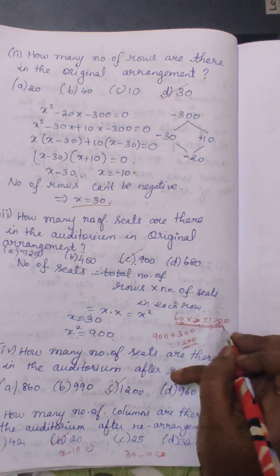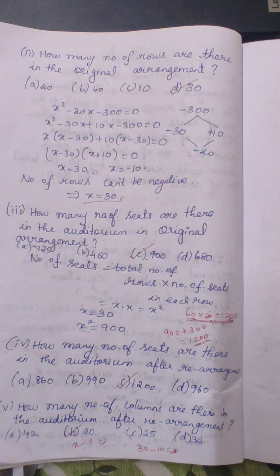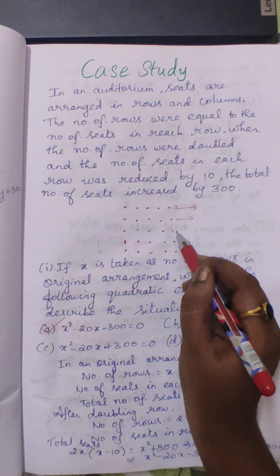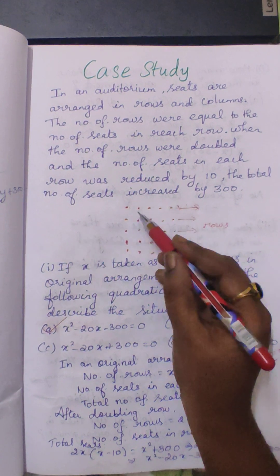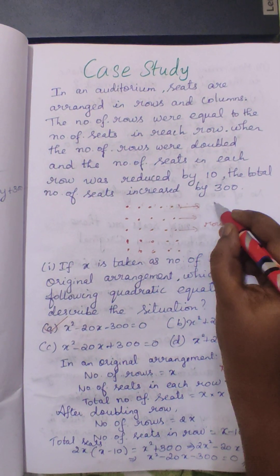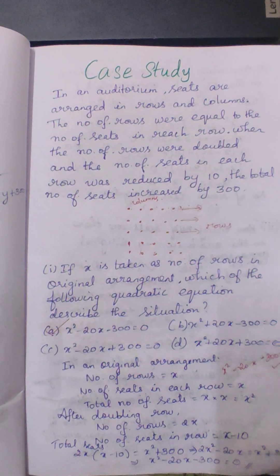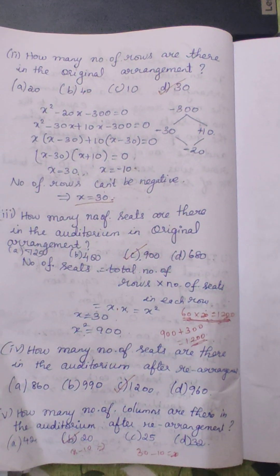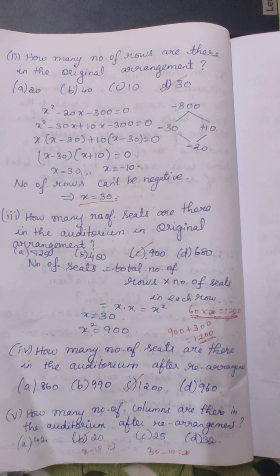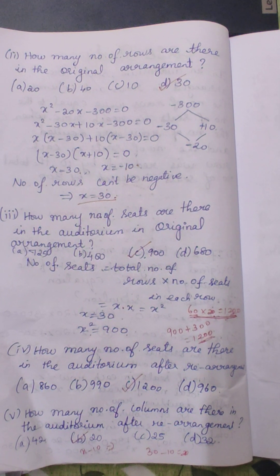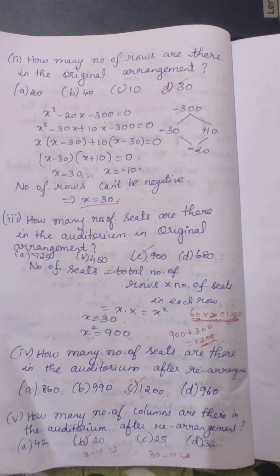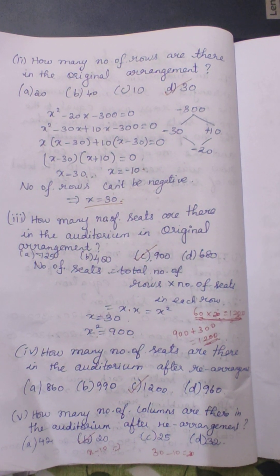The number of seats per row is the same as the number of columns. If the horizontal arrangement represents rows, the vertical lines are called columns. So we have 20 columns, meaning 20 seats per row after rearrangement. Hope you understood this case study problem. Thank you.